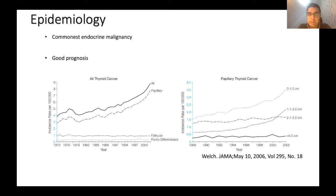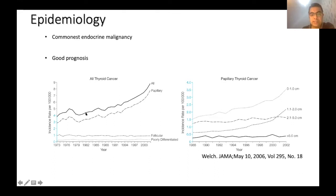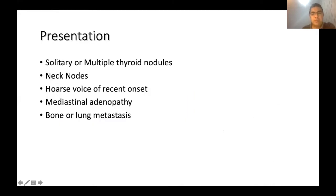I'm very grateful to my colleagues Iqtar and Karen Kapoor for sharing their slides and material. Thyroid cancer is the commonest endocrine malignancy and has a good prognosis. The graph on the left shows the incidence of all thyroid cancer is on the rise, partly due to ultrasound detecting more cases than before. The graph on the right also shows increasing incidence of papillary thyroid cancer specifically.